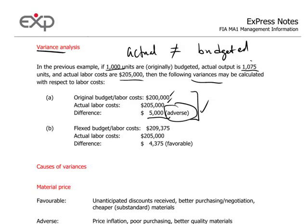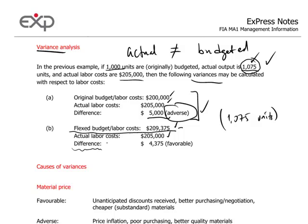However, keep in mind that the actual output achieved was higher than what was originally budgeted, and that is a good thing. Therefore, we would expect to have had higher labor costs because our output level was in fact higher than budgeted. So how do we really measure whether our variance is good or bad? We can say that if we had budgeted for 1,075 units, our flexed labor costs would have been $209,000. The actual labor costs of $205,000 are actually less than $209,000 — we beat the flexed budget by $4,375. It's actually a favorable variance.